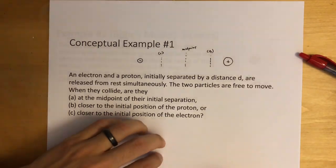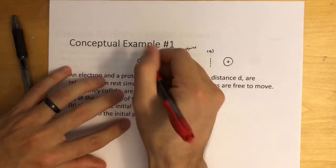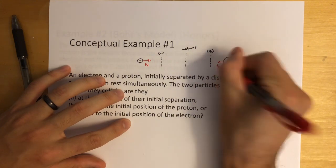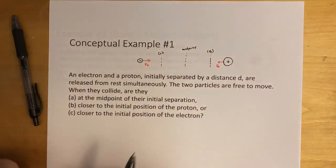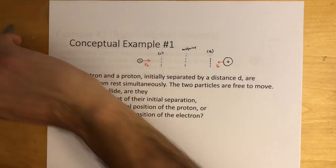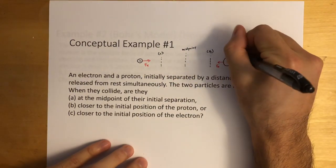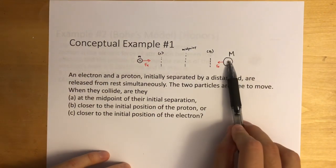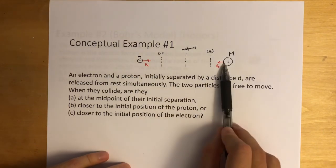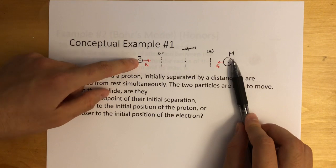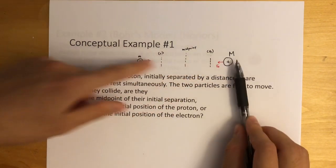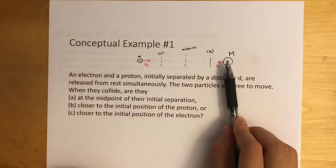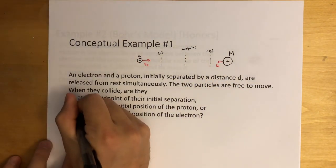Think about this: the force of electricity is the same on both the proton and the electron. However, what's different is their masses — the proton's mass is a lot bigger than the electron's mass. Since the proton has a bigger mass, it has a harder time moving. The electron has a smaller mass, so it accelerates much more. Even though they have the same force, they meet much closer to the proton — answer B, close to the initial position of the proton.